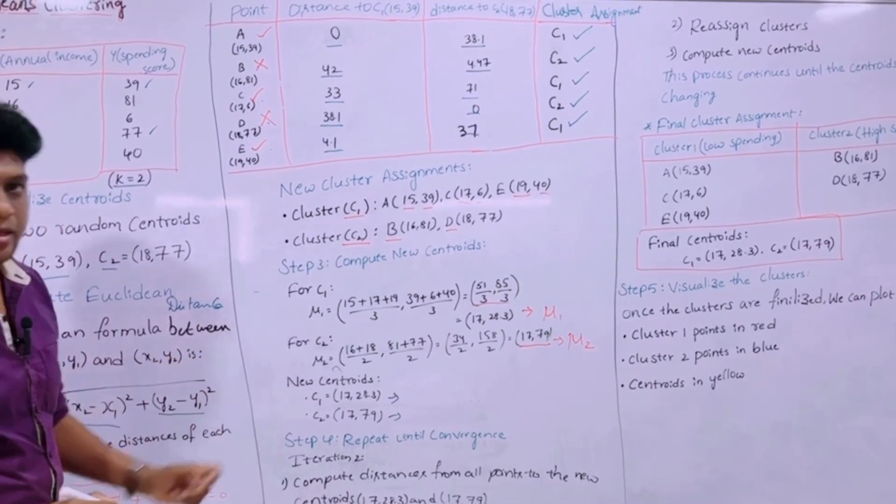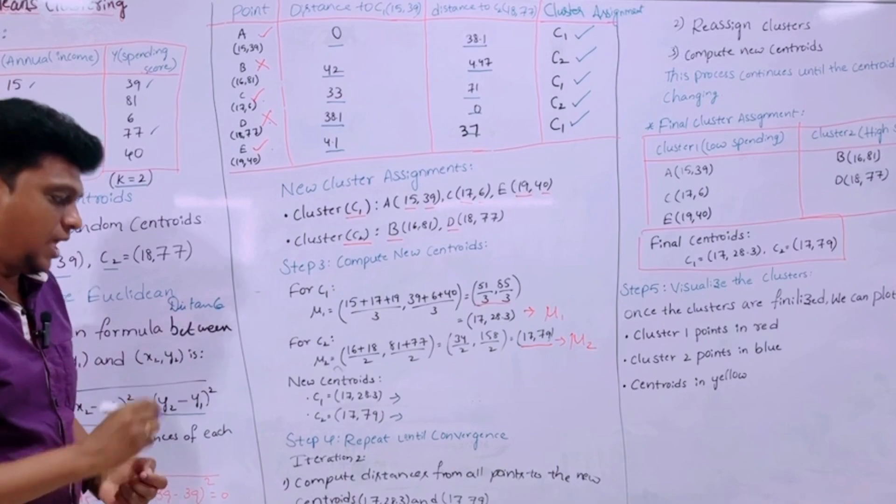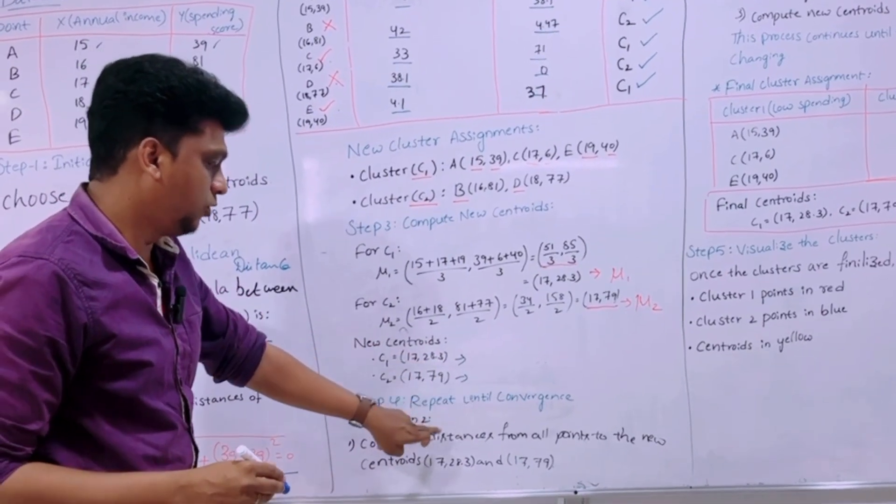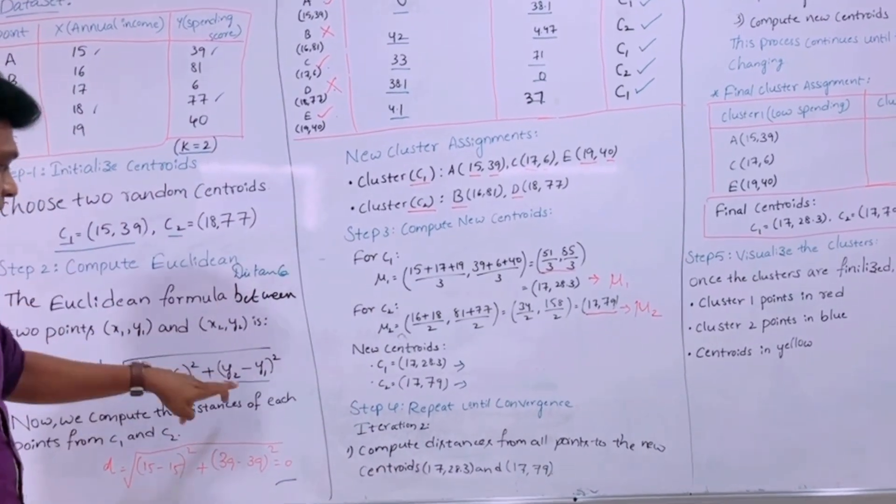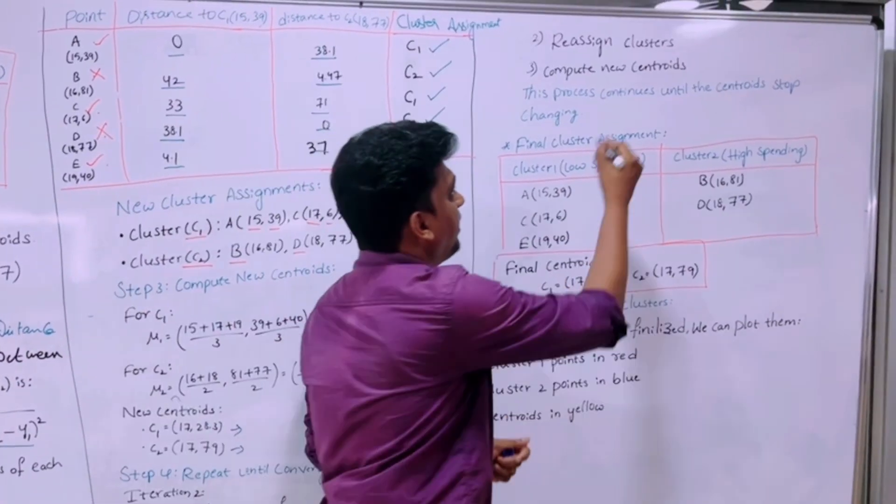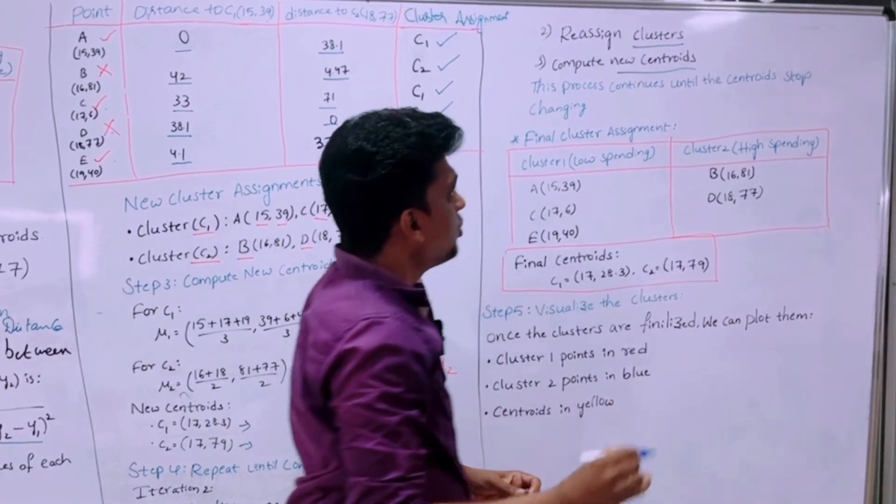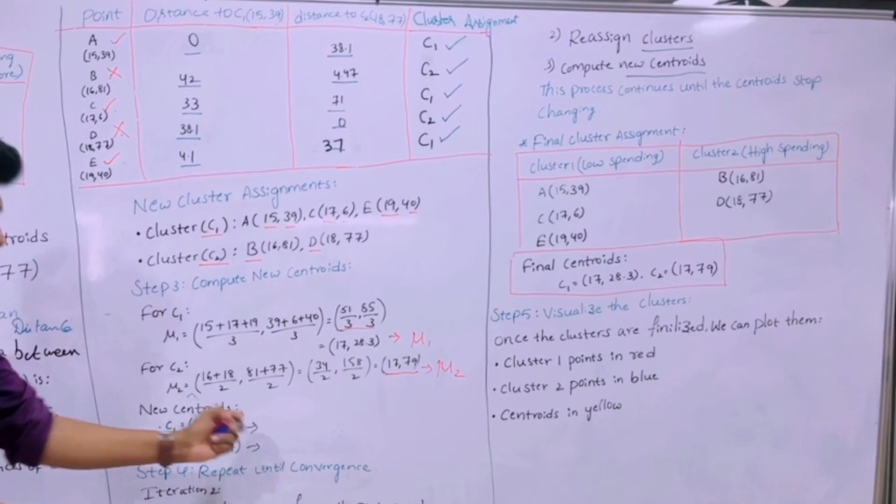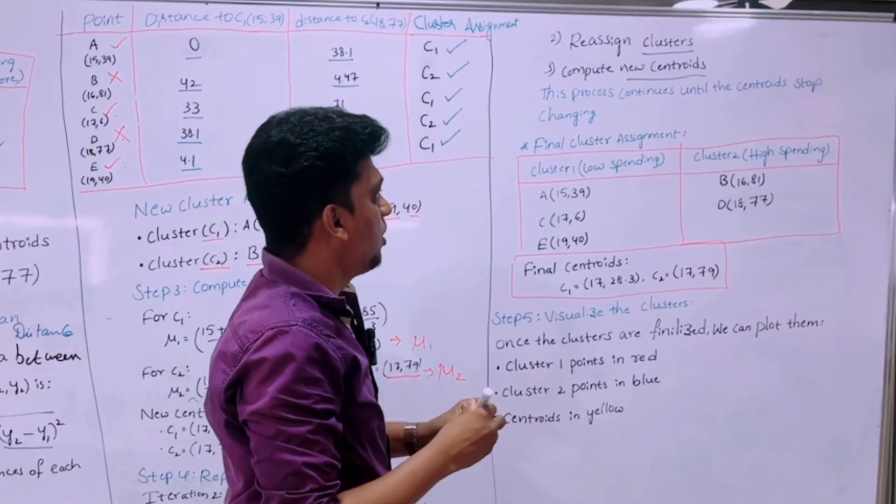Then we move to step 4. We have to repeat until the convergence will happen. So now again based on this C1 and C2 we have to compute the Euclidean distance again to find out and we should repeat the same step of distance between two points, then reassign the cluster values, then compute the new centroids. So we should continue this process until there will be no change in the value of centroids. So we stop the calculation at one point.